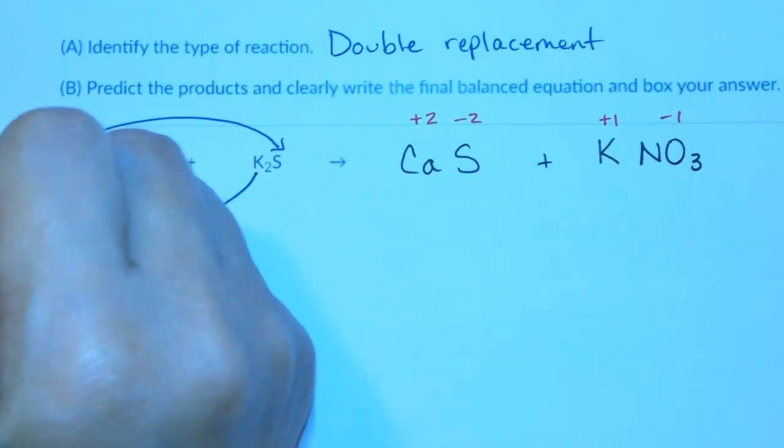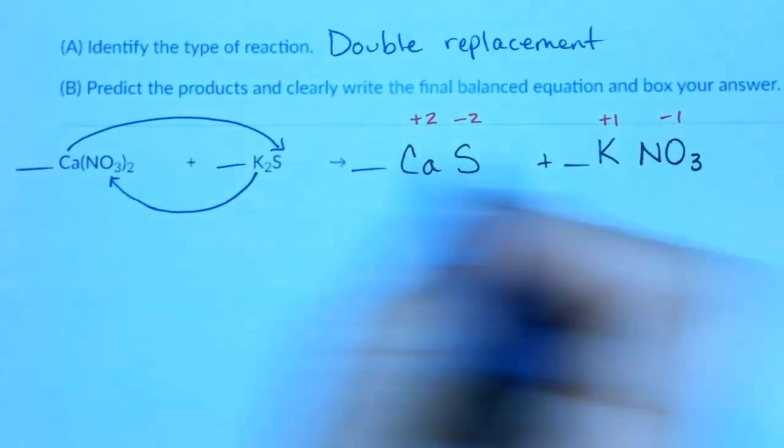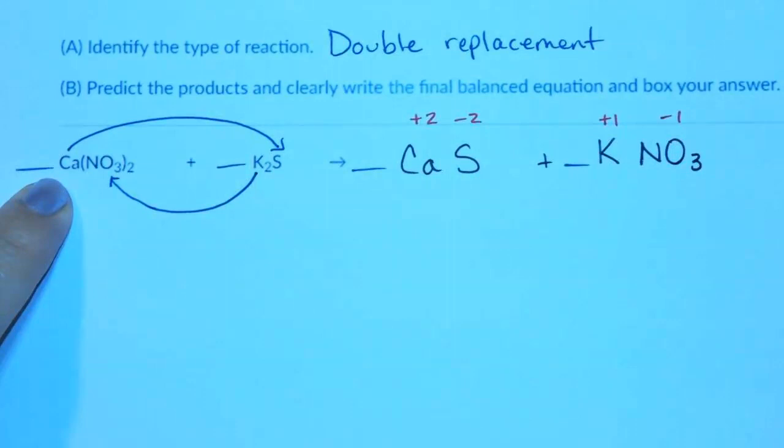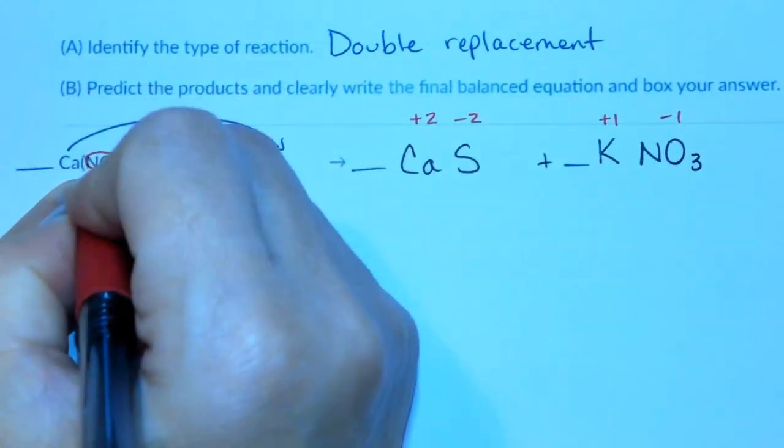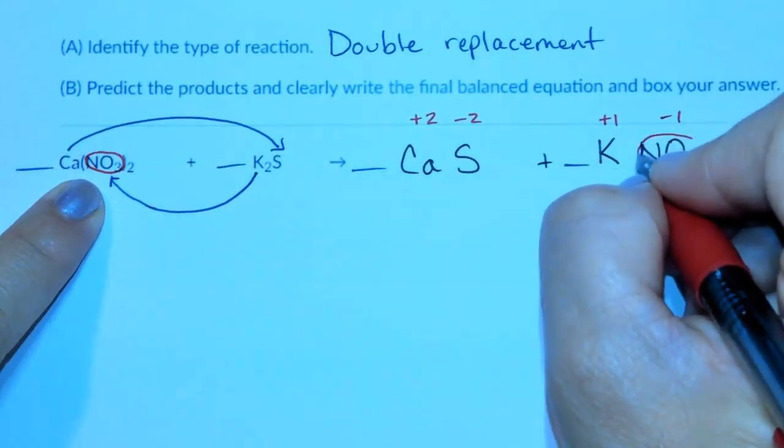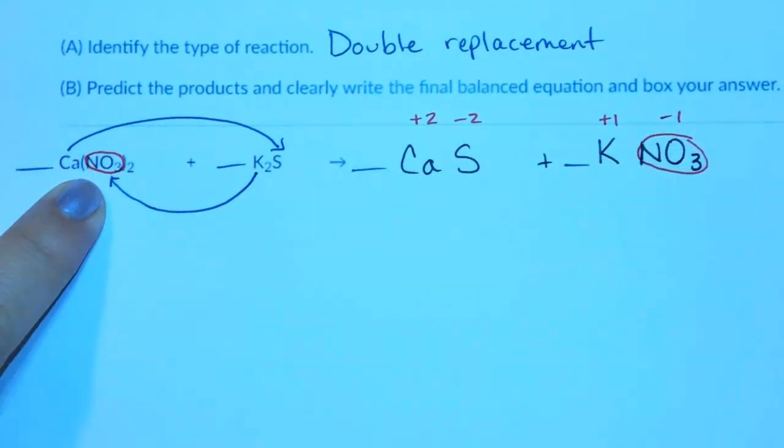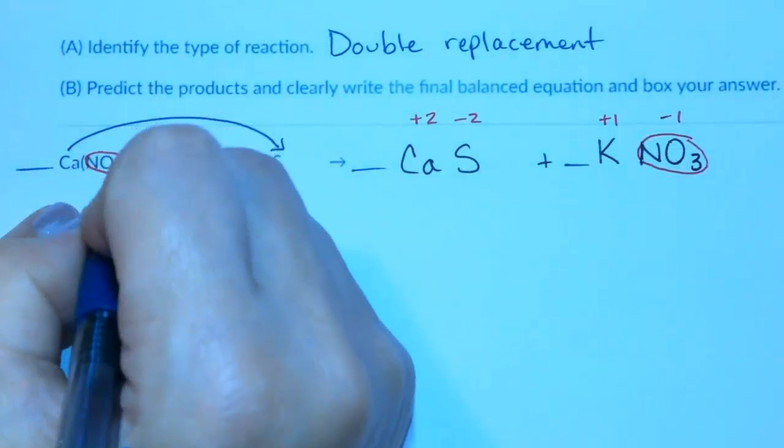So now I can balance the coefficients. We have one calcium, one calcium. I'm going to balance the nitrate, the NO3, as a bundle. So I'm going to circle NO3 on both sides of the equation and balance it as a bundle.